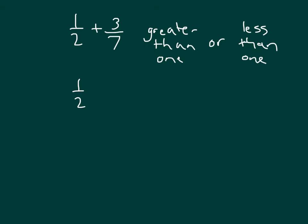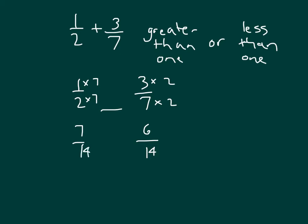So let's compare one-half with three-sevenths. To compare them, we would have to get a common denominator to compare like units. An equivalent fraction for one-half is seven-fourteenths, and three-sevenths is equal to six-fourteenths. We know that seven-fourteenths is bigger than six-fourteenths, meaning that three-sevenths — equivalent to six-fourteenths — is less than one-half. So the sum would only be thirteen-fourteenths, which is actually less than one. We know we're adding a fraction that's less than a half.